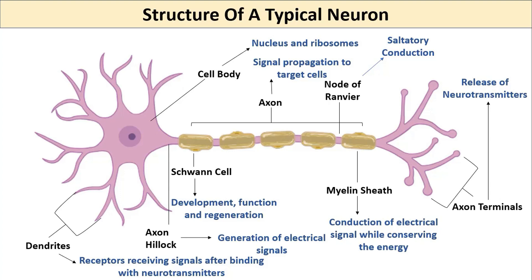The myelin sheath is formed by nearby glial cells called Schwann cells or oligodendrocytes. For lightning-fast signal transmission, the signal jumps between nodes of Ranvier in a process called saltatory conduction. This is how neuron structure beautifully correlates with its functions.